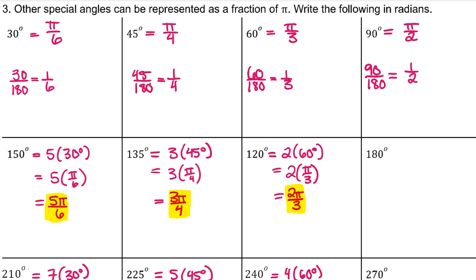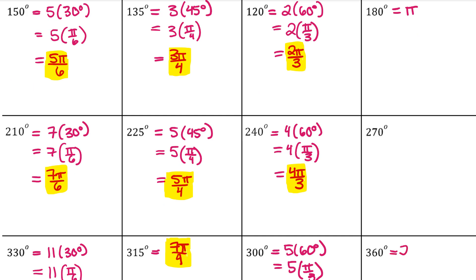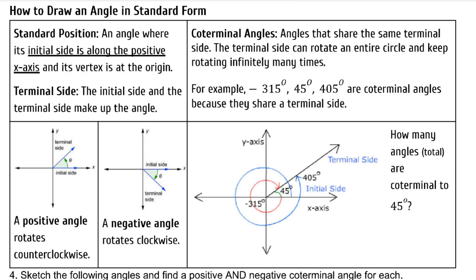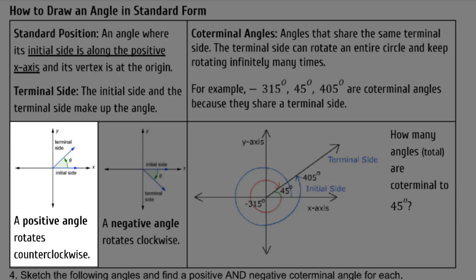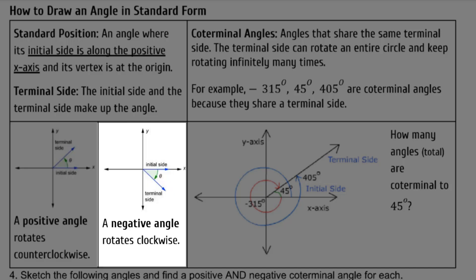90 is half of pi, because pi is 180. 2 pi is a full circle, or 360 degrees. 270 is 3 ninety-degree angles, so 3 times pi over 2, or 3 pi over 2. An angle is in standard position when its initial side is along the positive x-axis and its vertex is at the origin. The terminal side is the ending side that shows how far the angle goes. A positive angle rotates counterclockwise, and a negative angle rotates clockwise.